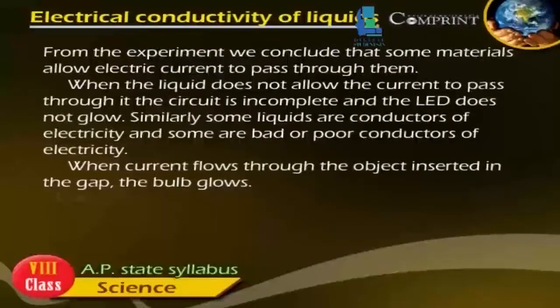From the experiment, we conclude that some materials allow electric current to pass through them. When the liquid does not allow the current to pass through it, the circuit is incomplete and the LED does not glow. Similarly, some liquids are conductors of electricity and some are bad or poor conductors of electricity. When current flows through the object inserted in the cap, the bulb glows.